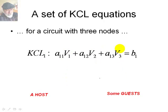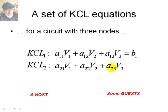For the second node, we write KCL2. Again, we have an equation very similar to that one. It will be A21, a number times V1 plus A22 V2 plus A23 V3 equals to a number. In this case, because the equation is of node 2, the host would be V2 and the guests would be the other node voltages V1 and V3.